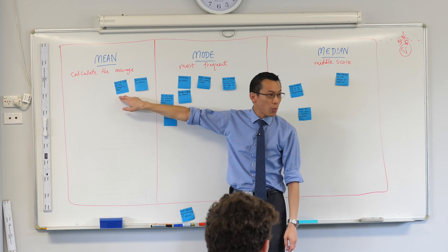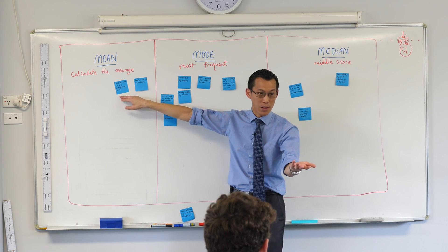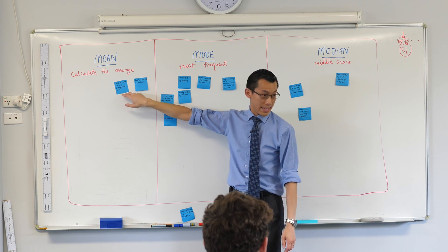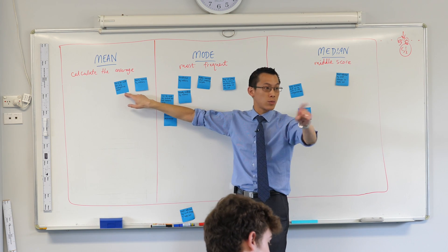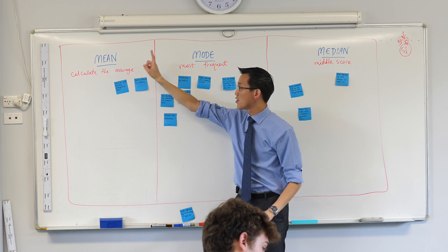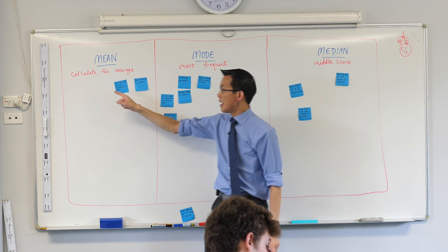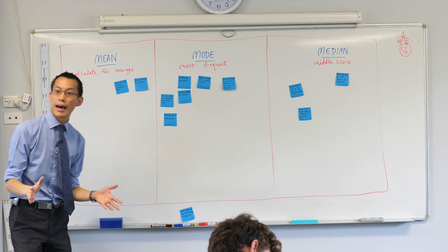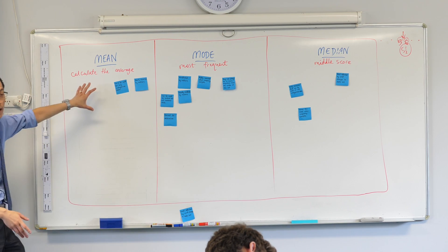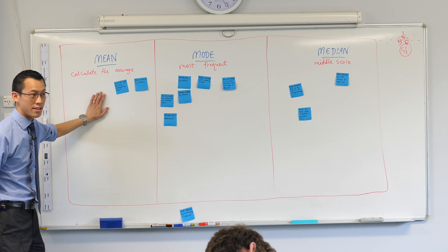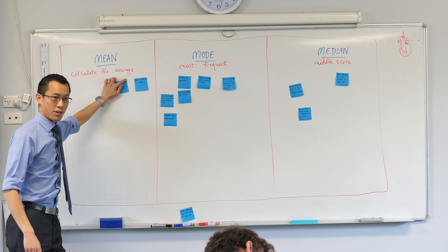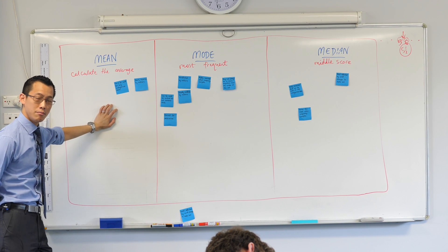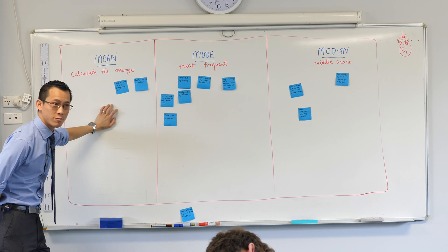Do we agree on this? Are we happy with this? So this is worth writing down for all of you. Under your mean column: it can't be used for any categorical data. You can't calculate the mean of, say, your favourite musical style. The mean is easily distorted by outliers — is everyone happy with that? Yes, because if you have like 2, 4, 6 and then you add a 60, it changes the mean completely.